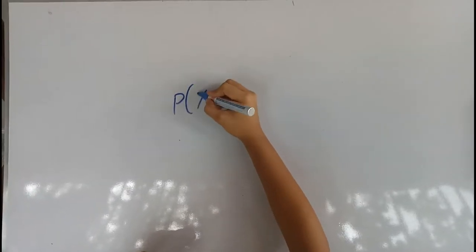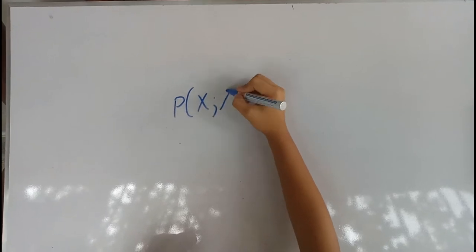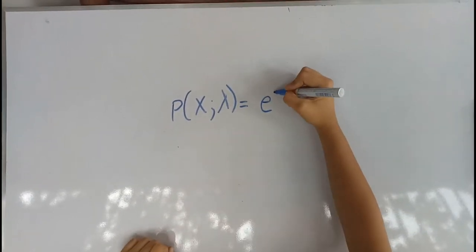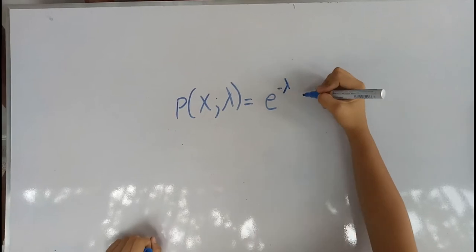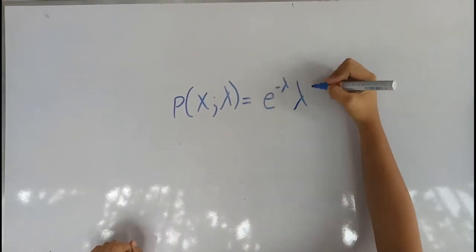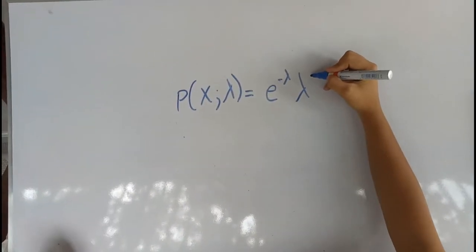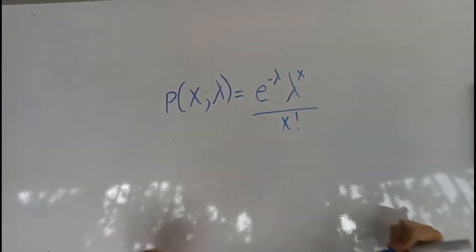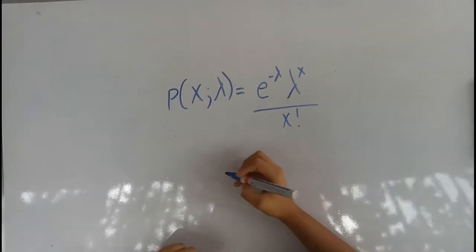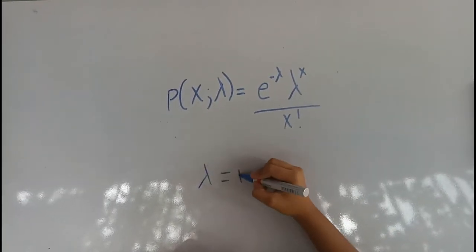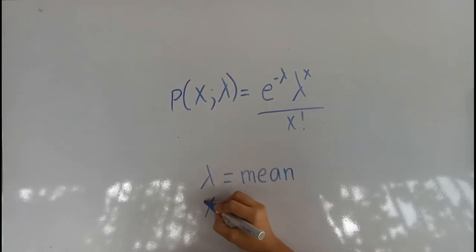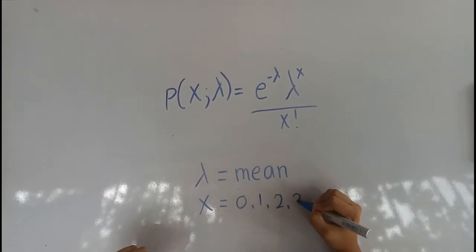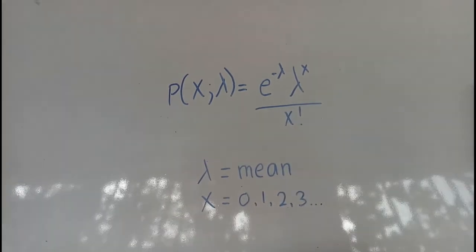The Poisson distribution is given by the formula: the probability of x given lambda is equal to lambda raised to x, times e raised to negative lambda, all over x factorial. Where x is equal to the number of occurrences such as 0, 1, 2, 3, and so on, and lambda is equal to the mean.